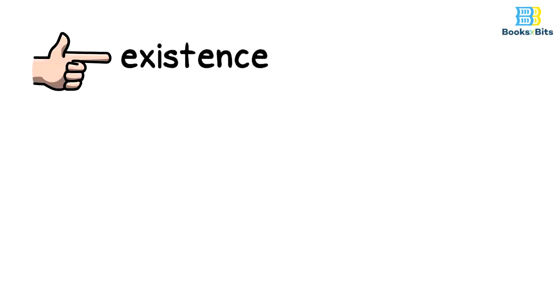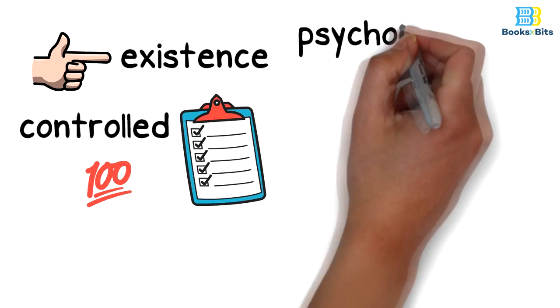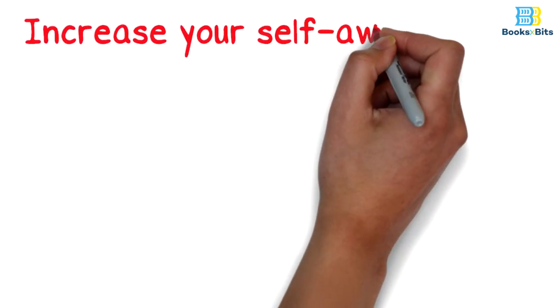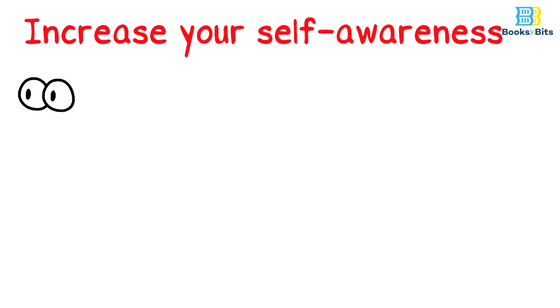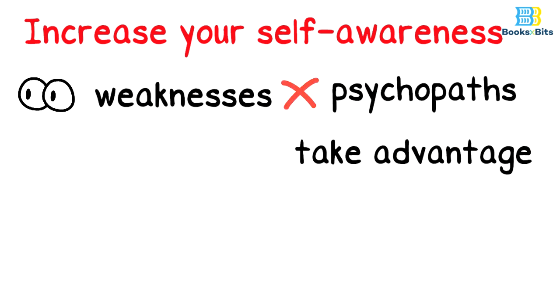Everything in this existence is controlled by certain standards. Therefore, psychological disorder requires us to have ways that can protect us from these psychopaths that exist in our life. Perhaps the most important ways to protect ourselves are as follows: increase your self-awareness. This means paying attention to your weaknesses so that psychopaths do not take advantage of them, as they are people who have the ability to use them ruthlessly.